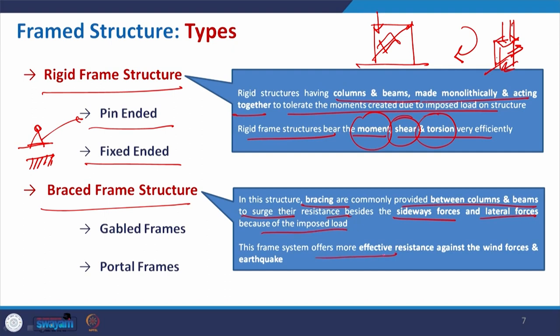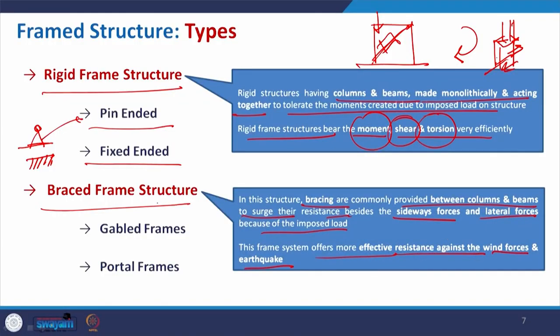This kind of frame system offers more effectiveness during wind force and earthquake — as already mentioned, along with the frame structure beam-column connection, if we can connect this diagonally with bracing, that will make it more resistant — protecting your building from lateral load that is wind load, or during the vibration during an earthquake. In braced frame structure we also have gable frames and portal frames, where instead of the joint, it acts as a single portal.